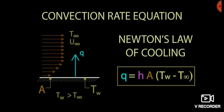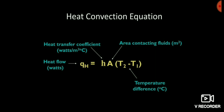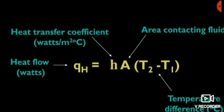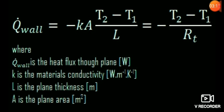The key difference: conduction always takes place within a solid body or solid-to-solid heat transfer, whereas convection involves two different mediums — solid to fluid or fluid to solid. Also note the unit difference: the heat transfer coefficient h has units of watts per meter squared per degree Celsius, while thermal conductivity k has units of watts per meter per kelvin.